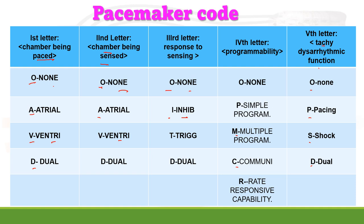Based on this code, in the patient file after pacemaker implantation, doctors write the code — maybe AAI, VVI, or DDD — so with the letters we can identify which area is paced, where it is sensing, what the response is, what the programmability is, and what the antitachyarrhythmic function is.